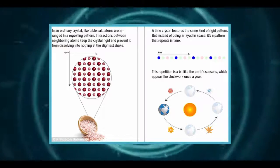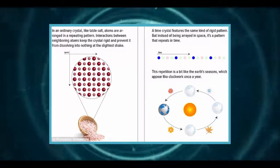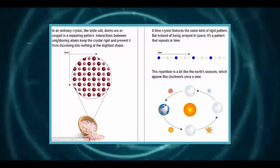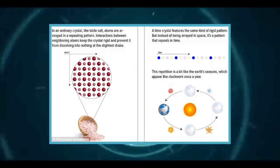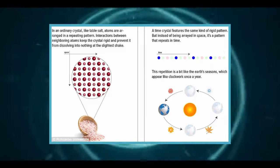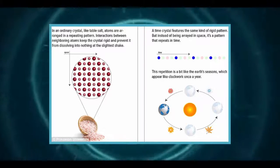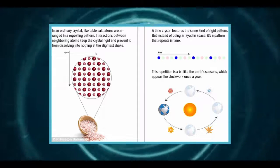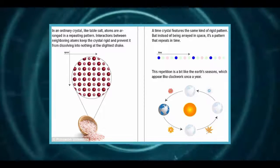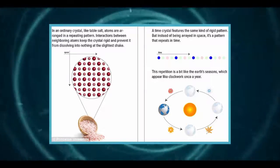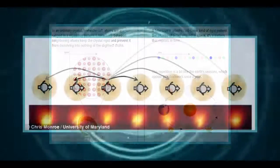They bombarded atomic ions with laser pulses to create a magnetic field and used another laser to partially flip the spins of the atoms. This sequence was repeated over and over, ultimately creating a pattern of flips that repeated in time. The team found that the ions responded with a slower frequency, exactly half as fast as the pulses that drove them.